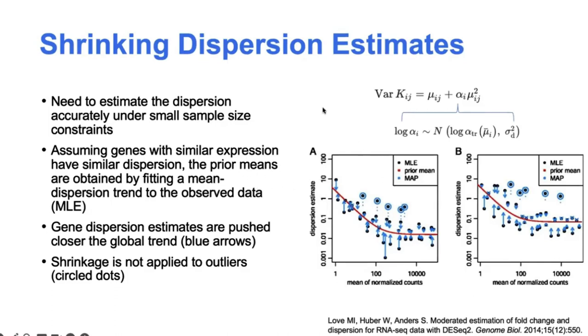And then some of these points, these genes that are circled here in blue, these are picked up as outlying estimates. So for these cases, the assumption is that they're far enough from the trended fit that it would be somewhat unreasonable to assume that the same prior can be used for these genes. So for these outlying genes, the shrinkage is not applied.